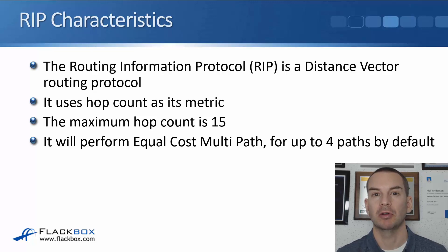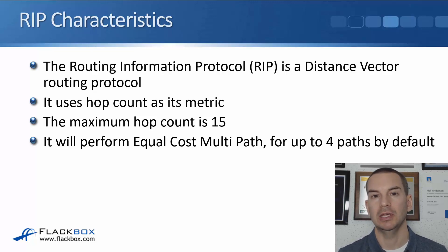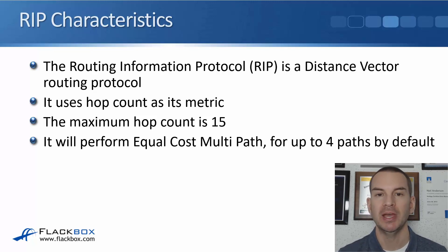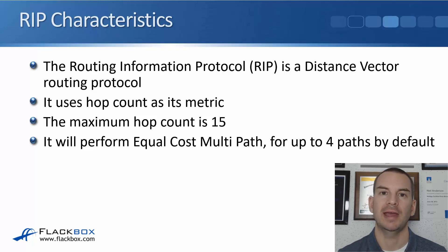So if router 1 wants to get to the 10.1.0.0 network and needs to go via R2, R3, and R4, then that network would be 3 hops away. A hop is a router that the traffic has to go through to get to the final destination. The maximum hop count is 15, so there's a scalability limitation with RIP, and it's not really used except in lab or demo environments.